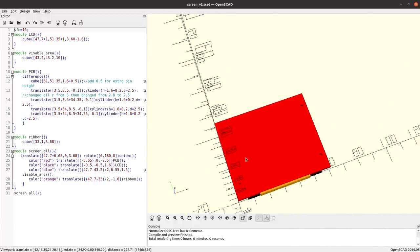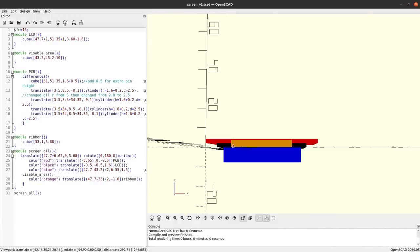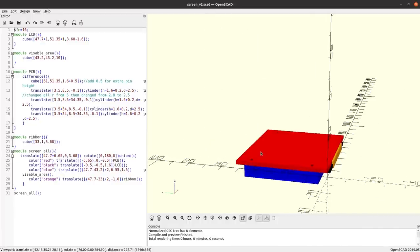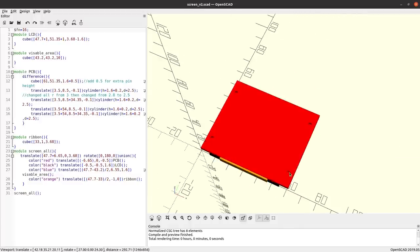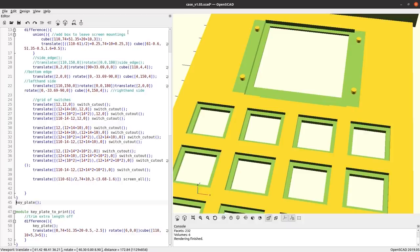The red bit is the room for the PCB and the yellow bit is the clearance needed for the ribbon cable that goes around. And then these mounting holes are in here so when I subtract it from the top framework it will leave these holes.